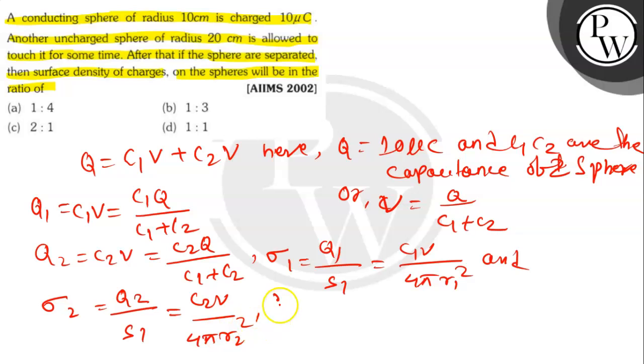Thus σ1/σ2 equals (Q1/R1²)/(Q2/R2²), which using the capacitance formula C = 4πε0R becomes (4πε0R1/R1²)/(4πε0R2/R2²).